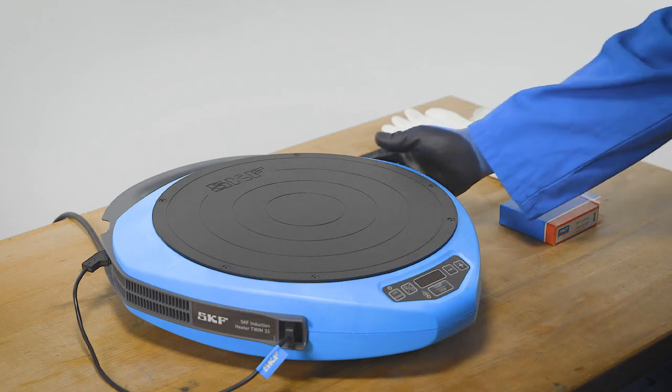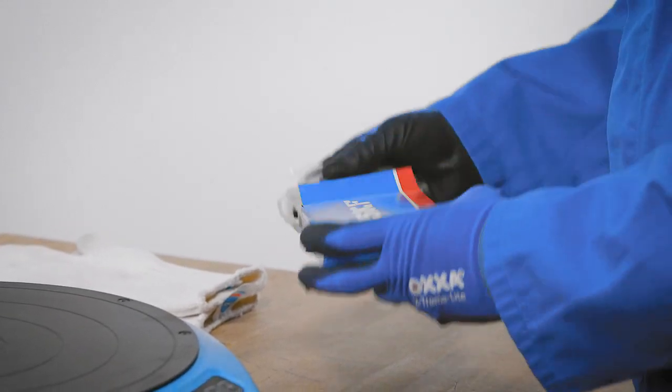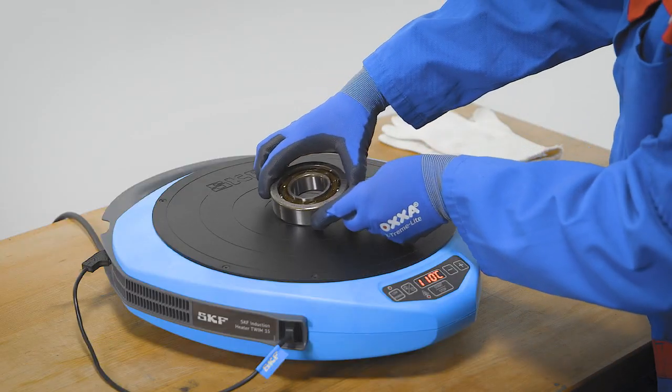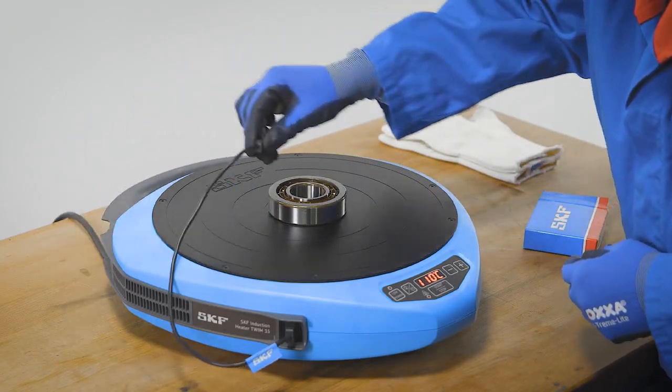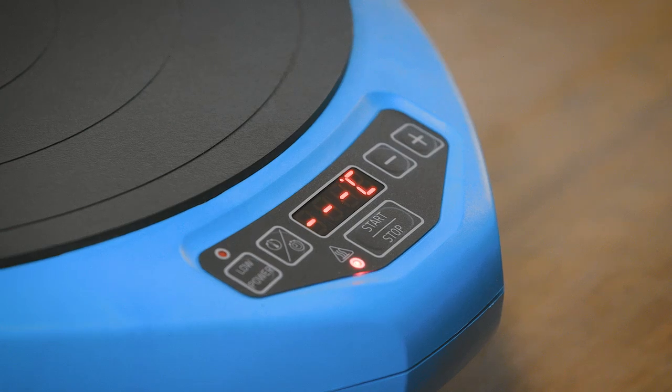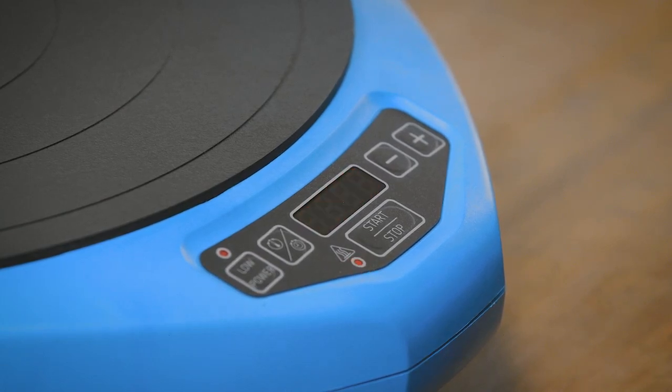Another common method to mount angular contact ball bearings is with heat. SKF supplies a wide range of bearing induction heaters for this purpose. In this instance, a small portable induction heater is used. Do not heat the bearing above 110 degrees centigrade and always use protective gloves.